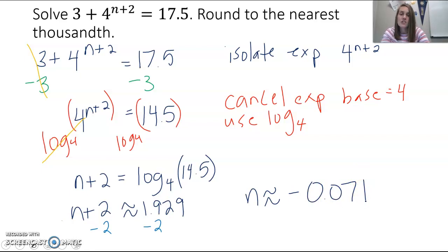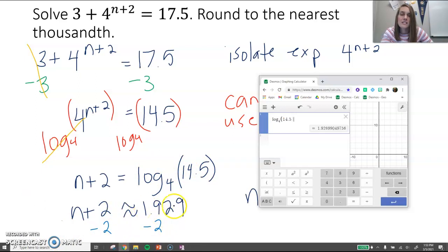So again rounding to the thousandth place. You could leave this as log base 4. If you didn't want to round right at that step, you could on your calculator have log base 4 of 14.5 minus 2, and there you can see that same answer that we got when we took 1.929 minus 2. We get negative 0.071.